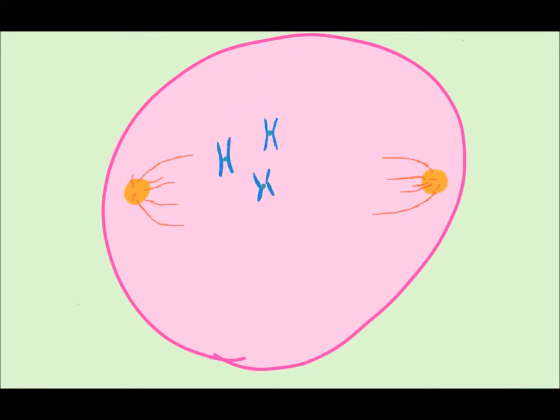In prophase, chromatin condenses, nucleoli disappear, the nuclear envelope completely dissolves, sister chromatids join at their centrosomes, the mitotic spindle begins to form, and centrosomes move towards the poles.